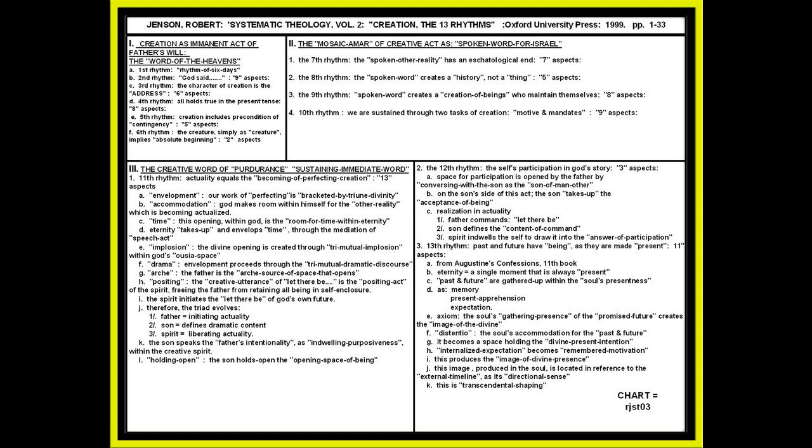So we have the following thirteenth rhythm axiom. The soul's gathering presence of the promised future creates the image of the divine. And he uses the concept of a distentio. Distentio is the soul's accommodation or the soul's opening up of room for the past and the future. It becomes a space that will hold the divine present intentionality for creation.